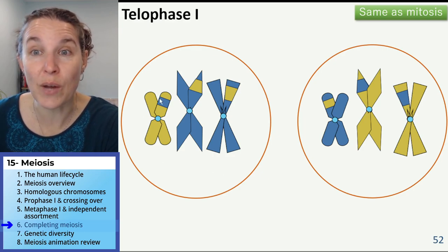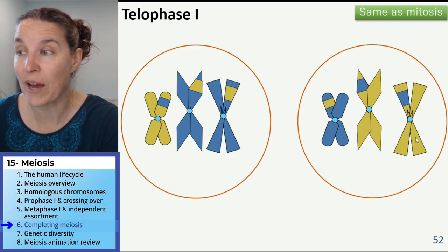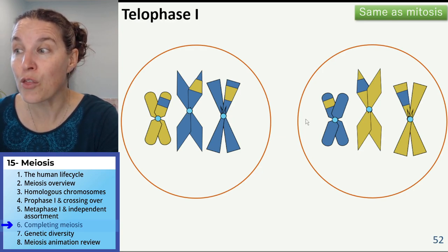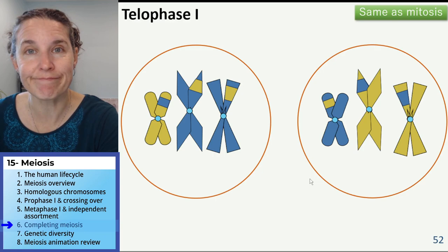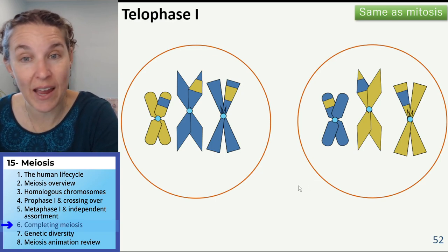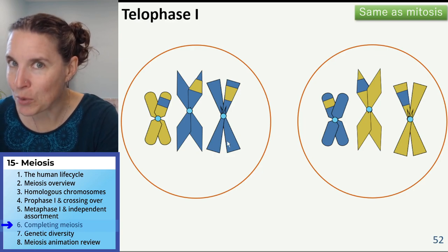Here are the two. At the end of telophase one, you have two daughter cells that have three chromosomes total in each one. They had six chromosomes before. Now they have three. These are haploid cells.